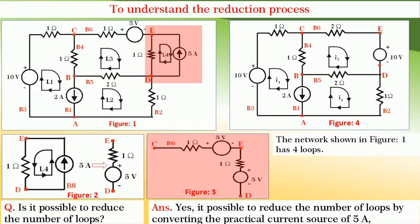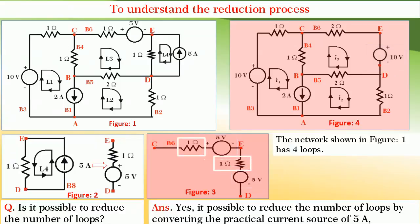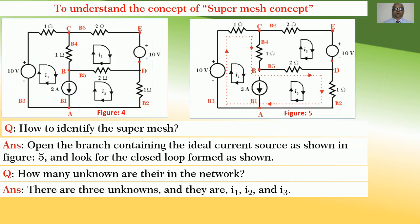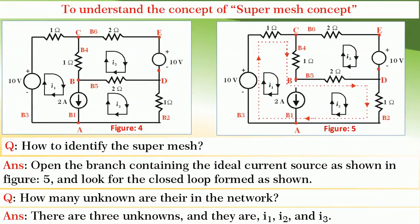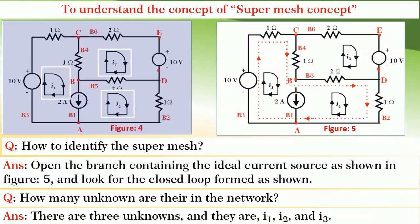Now, if we replace the branch between C and D, we find that 5 volts and 5 volts are in series — equivalent is 10 volts — and 1 ohm and 1 ohm are in series — equivalent is 2 ohm — and hence we get a reduced network as shown in figure 4. The reduced network has 3 independent loops, and 3 mesh currents I1, I2 and I3 are assumed as usual.